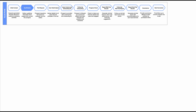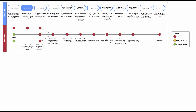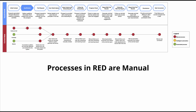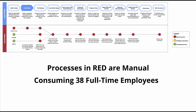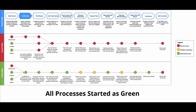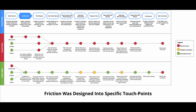Doing some fast forwarding, we mapped all the key touch points. The data-driven steps we just unpacked — the qualification process — are marked in blue. Then we overlaid the current state process and assessed the level of automation. Everything was red and manual — not a pretty picture. And a total of 38 FTEs, or full-time employees, were needed to operate the process.